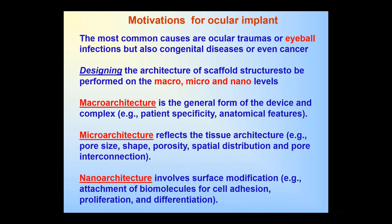The motivation here is that some accidents, congenital diseases, or other heart diseases can require this intervention. The scaffold architecture is realized in three dimensional types: micro, meso, and nano architecture. Depending on the dimensional range, each architecture clarifies something special. For instance, in the micro architecture, the pore size, the shape, the porosity, the spatial distribution, and the pore interconnection all need to be defined.